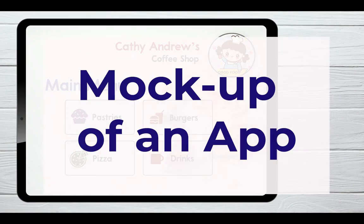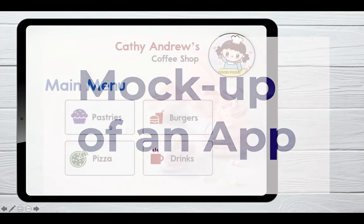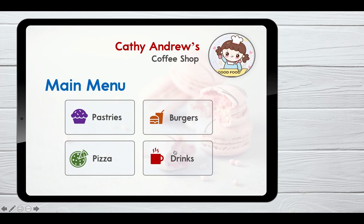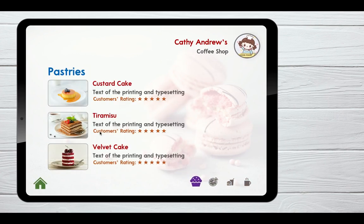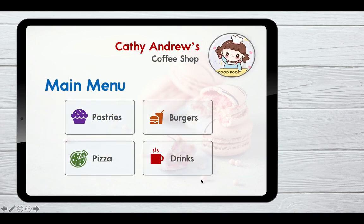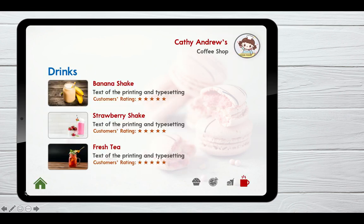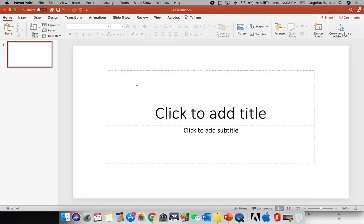In this particular activity we are going to do a mock-up of a coffee shop app. You have four categories — pastries, pizza, burgers, and drinks. If you click one of these categories, for example pastries, it goes to that page and the icon for that slide will be activated by changing its color. There is also a home button you can use to go back.